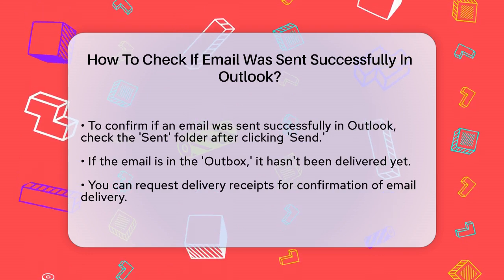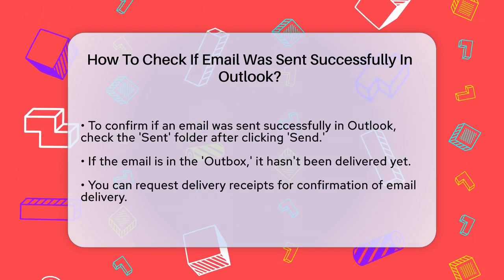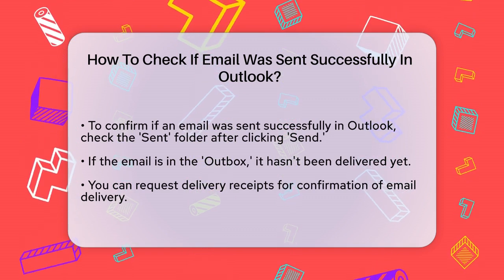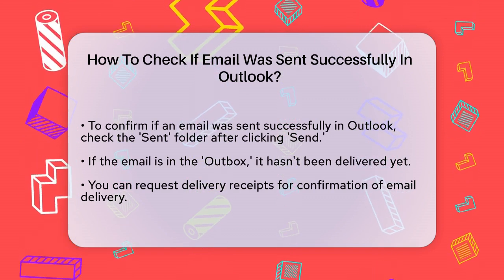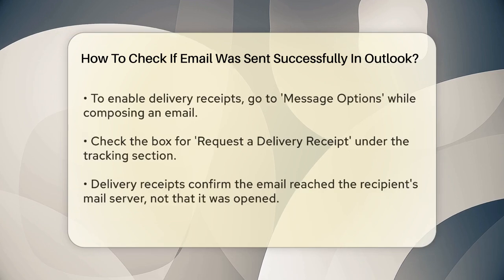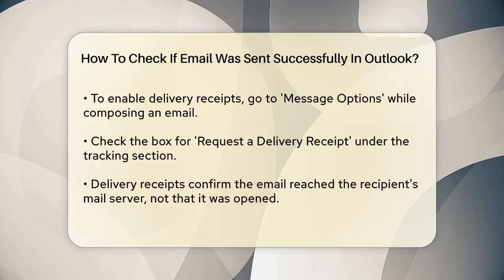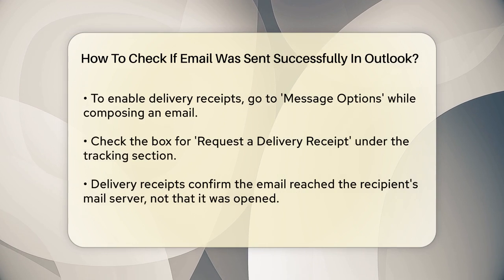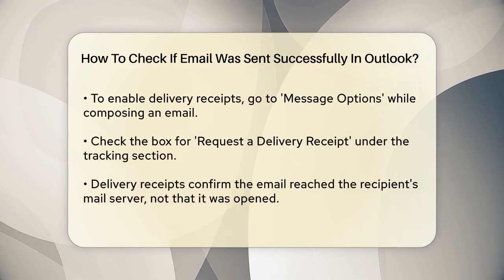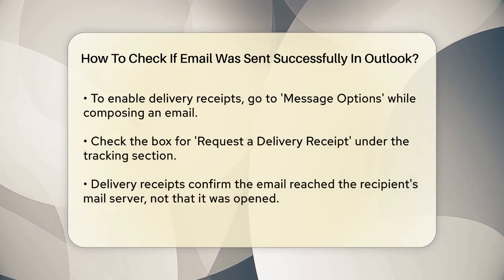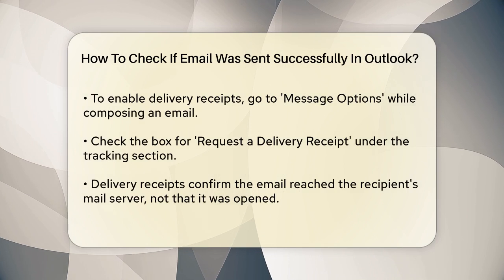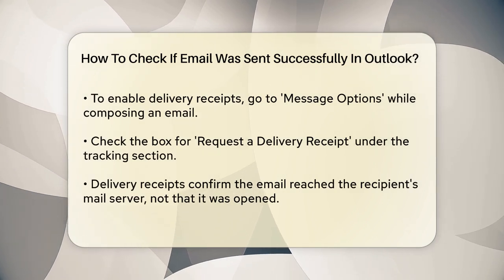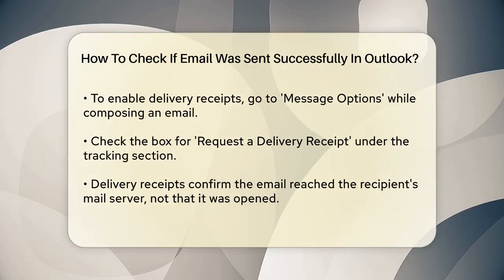Another effective way to ensure your email was delivered is by using delivery receipts. In Outlook, you can request a delivery receipt when you send an email. This feature sends you a notification once the email has reached the recipient's mail server. To enable this, go to the Message options when composing a new email and check the box next to Request a Delivery Receipt under the Tracking section.